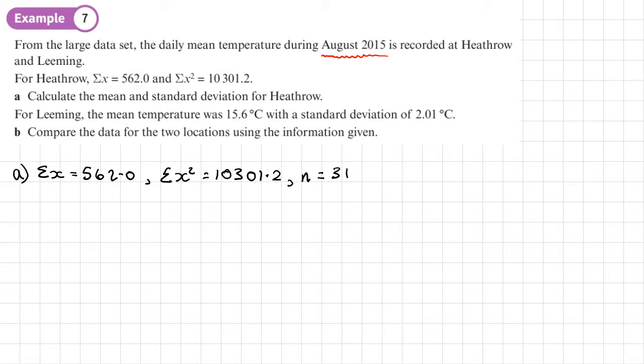Right, so let's start by calculating the mean X bar, which is going to be the sum of X over N. So that's going to be 562.0 divided by 31, and I get 18.1209. I'll write down a rounded answer at the end.